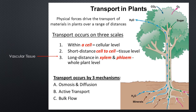Water and sugar transport in plants occurs at three scales. Physical forces such as cohesion and adhesion help drive transport over long ranges. First is transport within a cell — for instance, right across a root membrane where water comes in and can go into the vacuole.